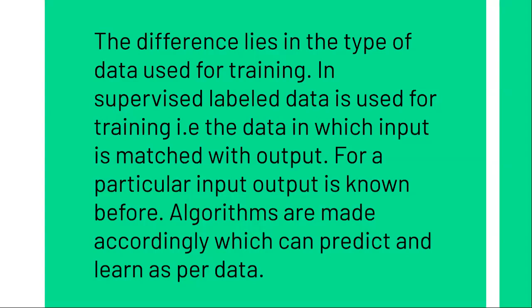The difference in supervised learning comes at the time of training — the data given is labeled data. Because the data is labeled, it is clear that for this input, this output will be received. The machine's algorithm is designed accordingly so that on labeled data, this input gives this output. After this complete training, the machine is given test data, and finally on unlabeled data, we check whether the machine is giving the correct output or not.